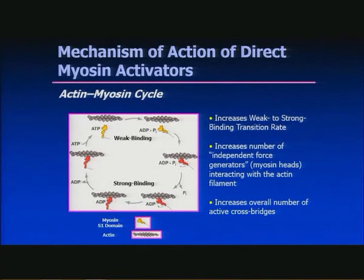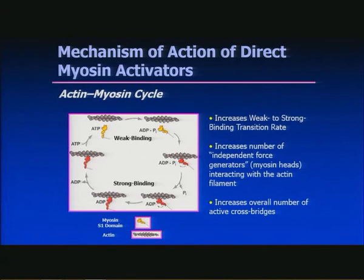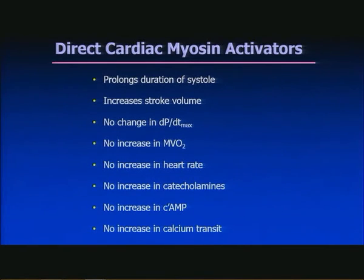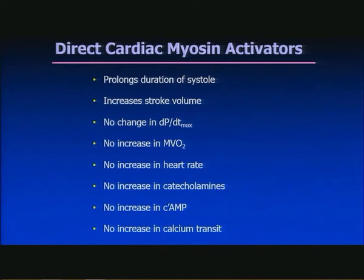A more promising drug is omecamtiv mecarbil, an inotropic-like agent with a different mode of action and no known arrhythmogenic potential. It increases the weak-to-strong binding transition rate, increases the number of myosin heads interacting with the actin filament, and increases overall active cross-bridges. Effects include prolonged duration of systole, increased stroke volume, no change in dP/dT max, no increase in MVO2, heart rate, catecholamines, cyclic AMP, or calcium transients — hence no arrhythmogenic potential.